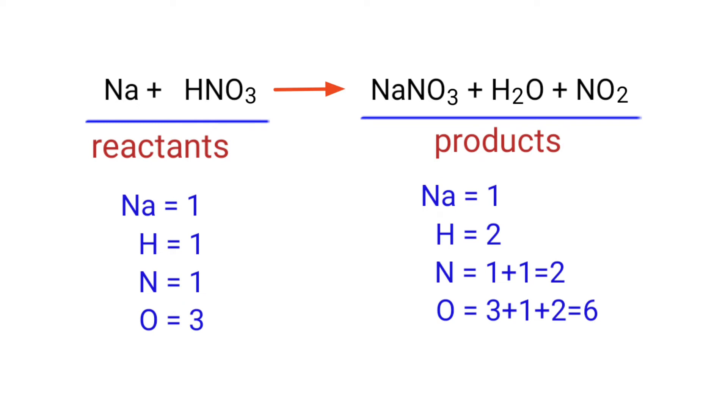If you look at this equation, the equation is not balanced. In the reactants side there are 1 sodium atom, 1 hydrogen atom, 1 nitrogen atom, and 3 oxygen atoms present. On the products side there are 1 sodium atom, 2 hydrogen atoms, 2 nitrogen atoms, and 6 oxygen atoms present.